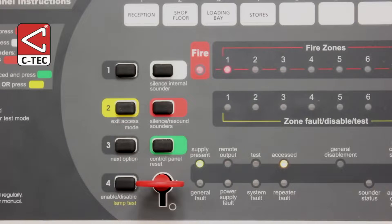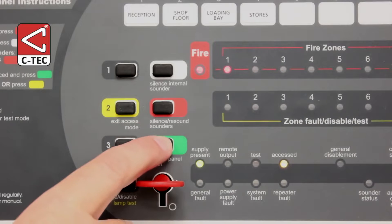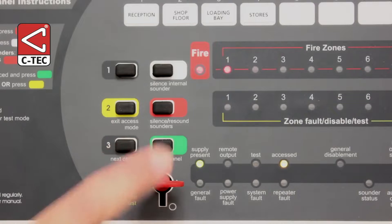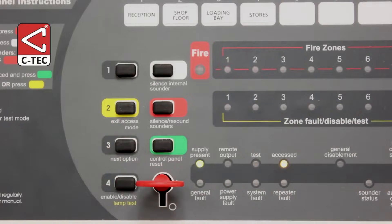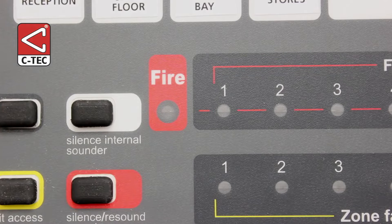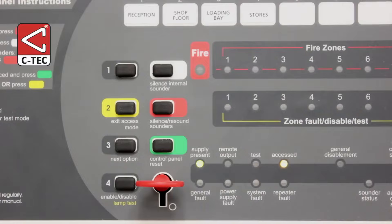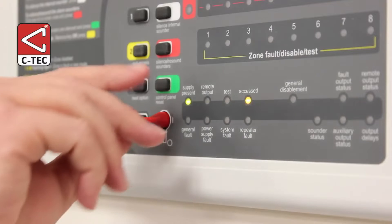After the cause of the alarm has been investigated and you are confident that everything is back to normal, you can reset the panel by pressing the reset button. The panel will give a double beep to confirm that the reset process has started, and after a few seconds its red general fire and relevant zonal indicators will go out. You can now exit Access Level 2 by turning the key to the O position and removing it.